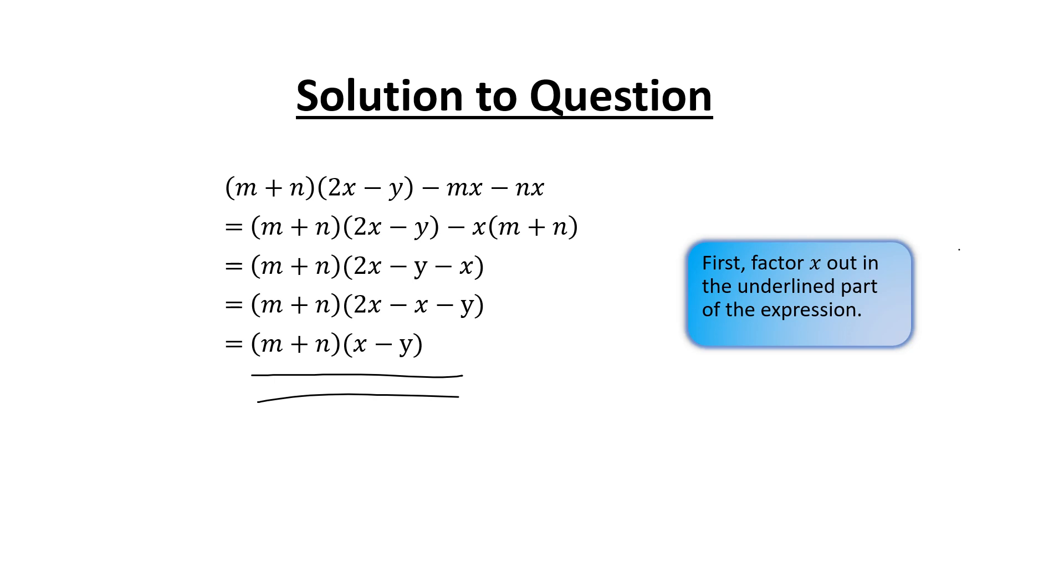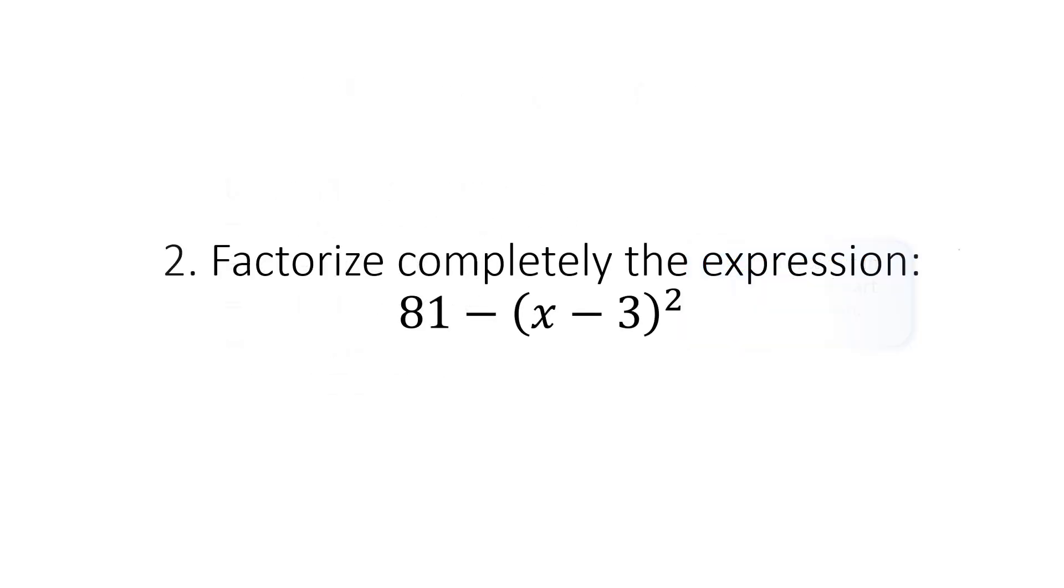Let's move on to the second question. Factorize completely the expression: 81 - (x - 3)². Let's look at how we solve this question too. I hope you are getting ideas for this one too. Very simple question.